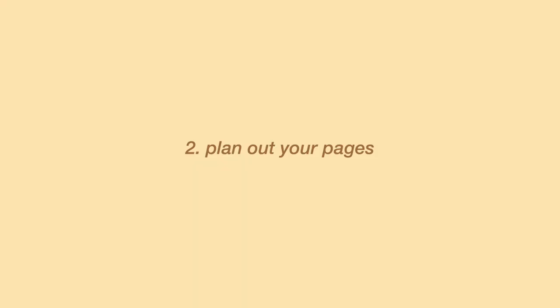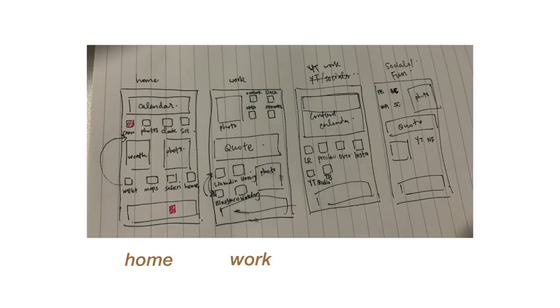Once you have your background, you want to plan out what your home page is going to look like. This is what I wrote down in my journal: I have my home page, my work page, my YouTube work, and then my social/fun section — so four pages total. I suggest planning it out first so you know which icons you want to customize, because you don't want to go customizing tons of icons and then not end up using half of them.